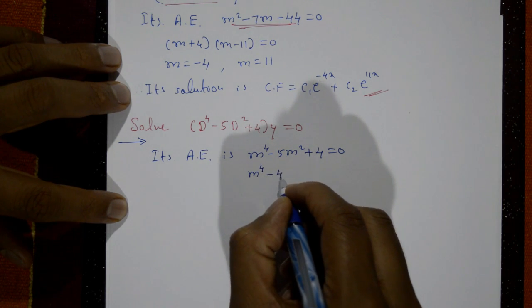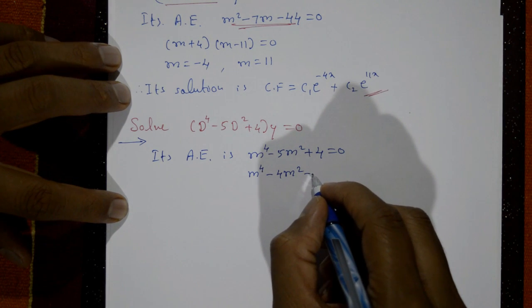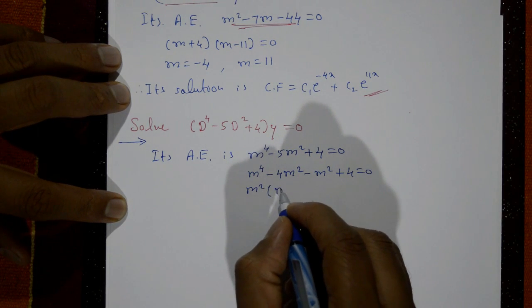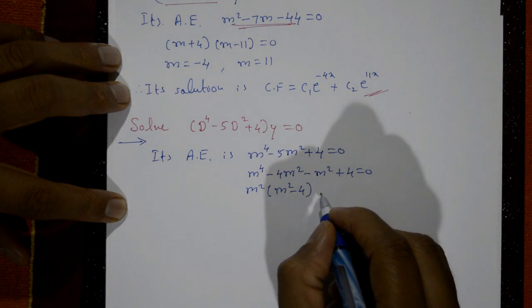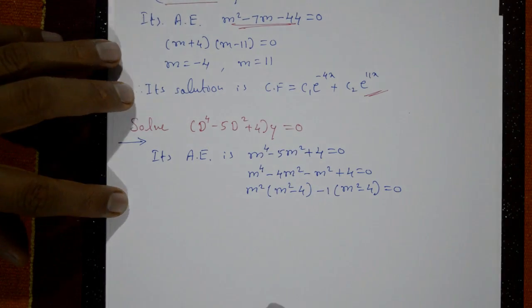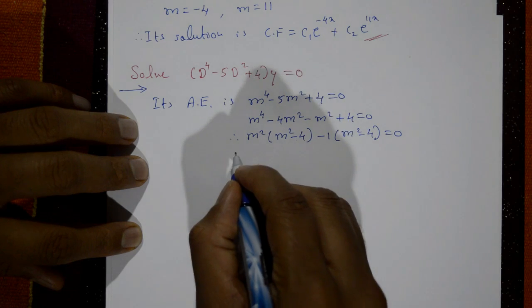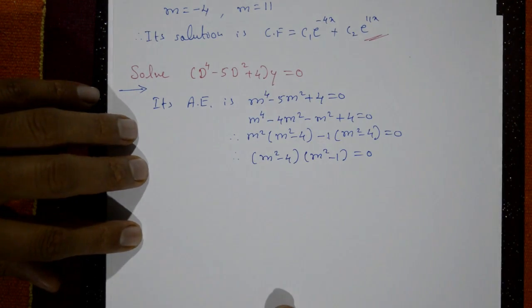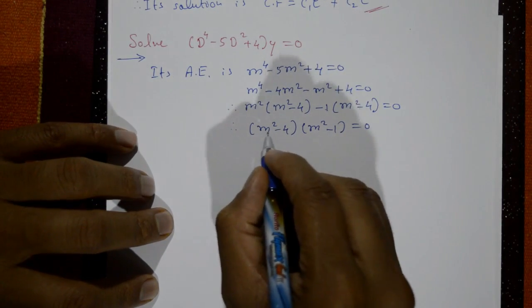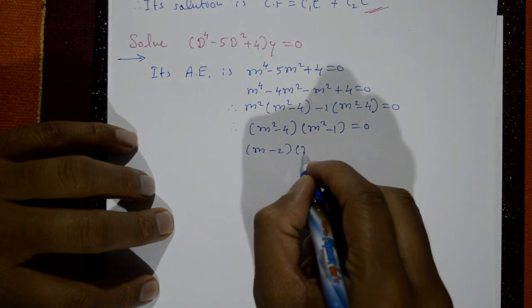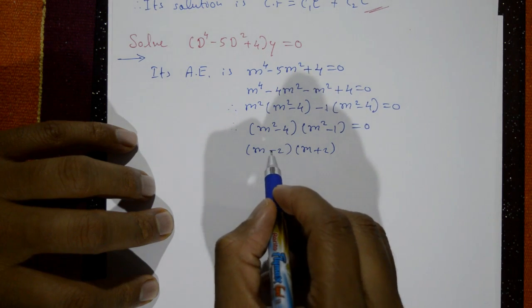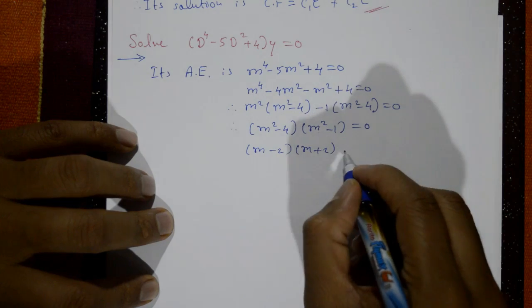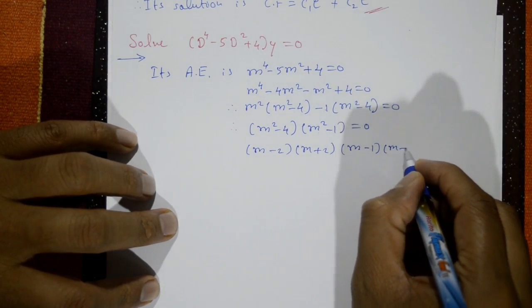Factorizing: m⁴ minus 4m² minus m² plus 4 equal to 0. Taking m² as common from the first two terms and minus 1 from the last two, we get m²(m² minus 4) minus 1(m² minus 4) equal to 0. Therefore, (m² minus 4)(m² minus 1) equal to 0. Applying the a²−b² formula: (m minus 2)(m plus 2)(m minus 1)(m plus 1) equal to 0.